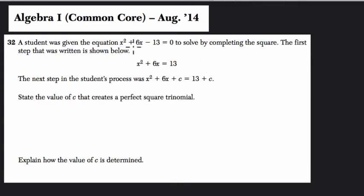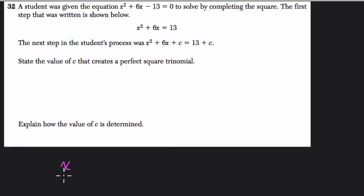It says the student was given the equation x squared plus 6x minus 13 equals 0. So I'm going to actually write that down right now. I like to write these problems down as I go. x squared plus 6x minus 13 equals 0.